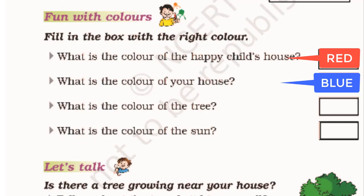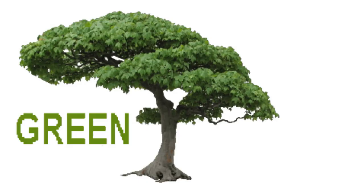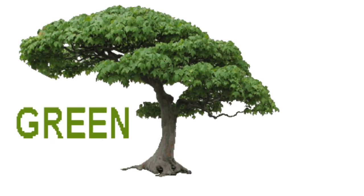The next question is what is the color of the tree? To find the answer I will go back to the poem and read it. I have a green green tree. This tells me that the tree is green.